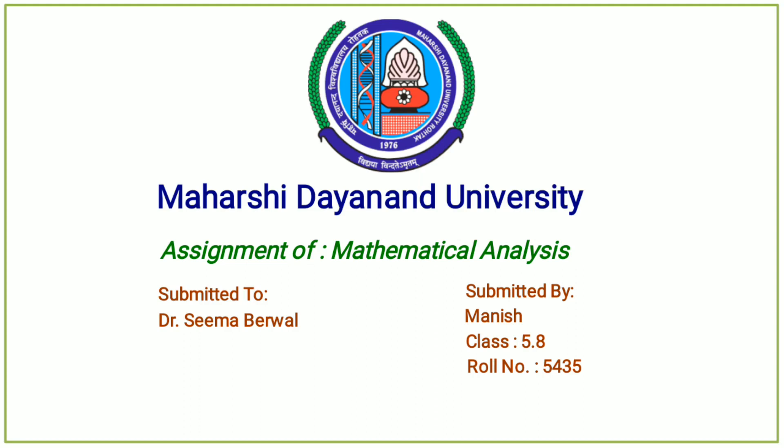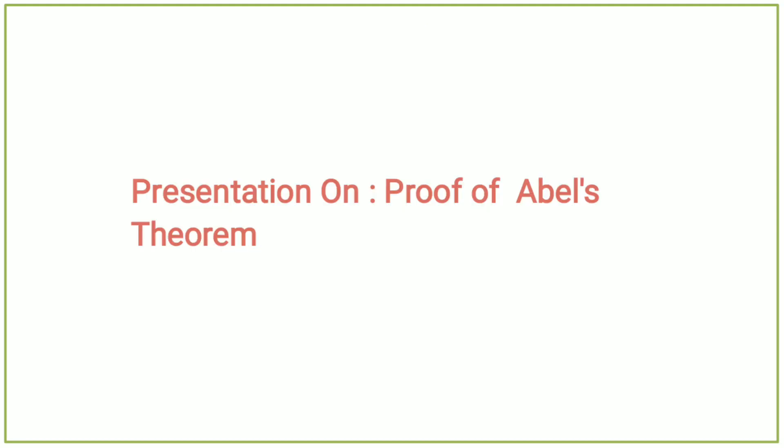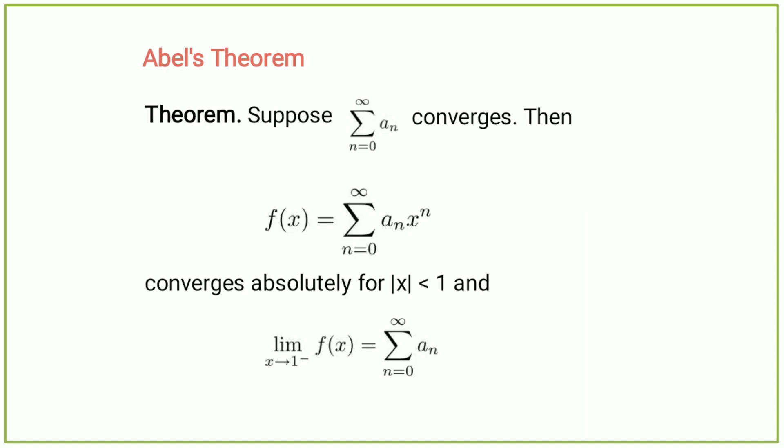Hello everyone, today I will explain the proof of Abel's theorem. Suppose the summation from n equals 0 to infinity of aₙ converges. Then f equals the summation from n equals 0 to infinity of aₙxⁿ converges absolutely for mod of x less than 1, and the limit as x tends to 1 from the negative of f equals the summation from n equals 0 to infinity of aₙ.